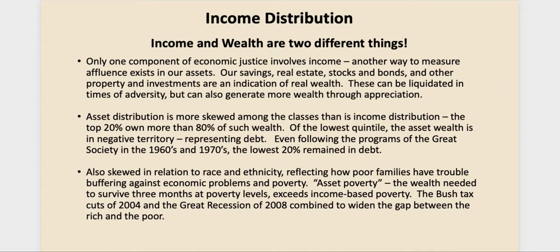Ten years ago when our economy imploded in 2008, much of it had to do with the housing bubble where people purchased homes much bigger than they could afford, and banks were eager to sell these high-risk mortgages. Homeowners found themselves underwater — they couldn't sell their houses because they owed more than the market would allow. Having a mortgage on a house doesn't mean you're wealthy at all. Assets can be liquidated in tough times, but if you don't need to liquidate, they just make more money — that's how the 1% work. This may be why the current younger generation could be the first in American history that doesn't do better as a group than the prior generation.